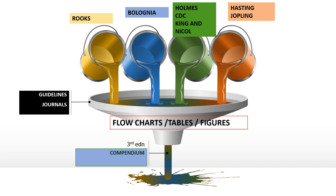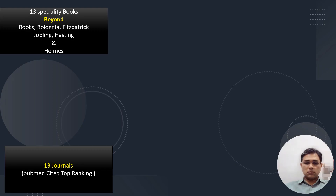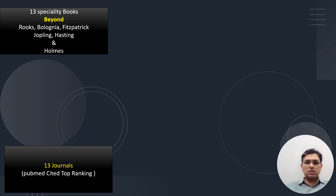Now, what's new in this edition? In this particular edition we have 13 specialty books beyond the original books — specialty books on Pemphigus, Bullous Pemphigoid, acne, and keratinization disorders.